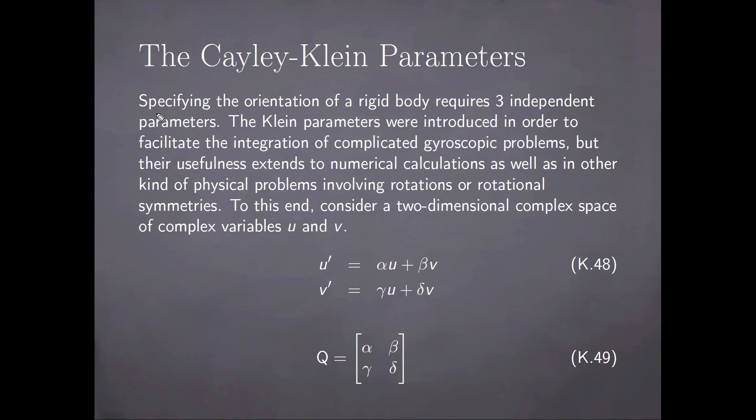We know that specifying the orientation of a rigid body requires three independent parameters. The Cayley-Klein parameters were introduced in order to facilitate the integration of complicated gyroscopic problems, but their usefulness extends to numerical calculations as well as other kinds of physical problems involving rotations or rotational symmetries. To this end, we are to consider a two-dimensional complex space of complex variables u and v.